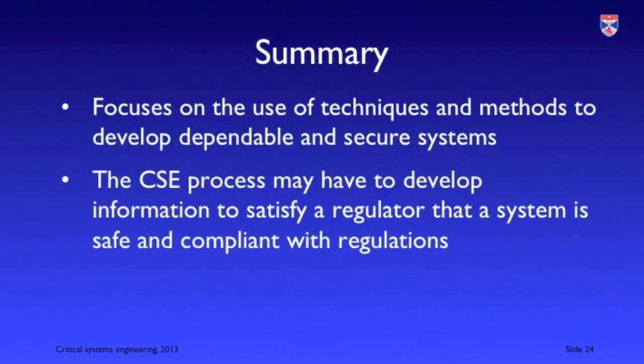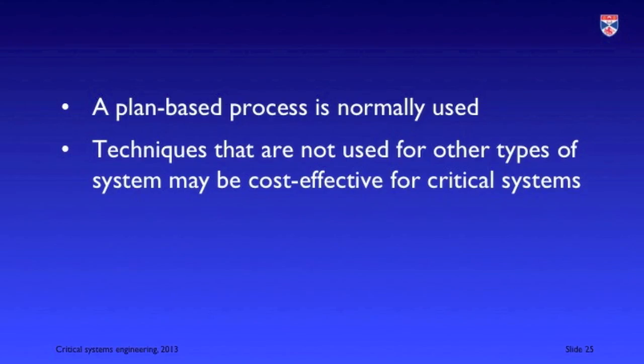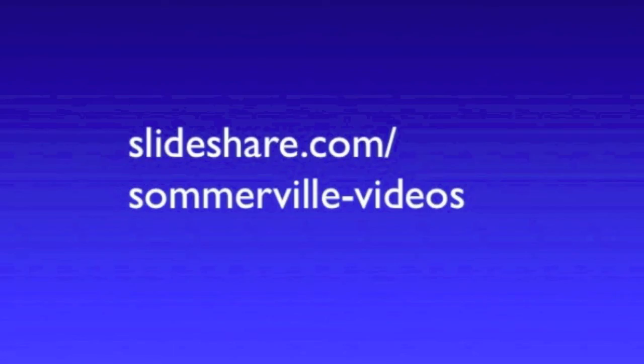Critical systems engineering focuses on the tools, techniques and technologies for developing reliable and secure systems. The critical systems engineering process may have to collect and collate information used by a regulator in the certification of the system. Normally a plan-based process is used for critical systems engineering rather than an agile process. Tools, techniques and technologies that are not cost effective for other types of software engineering may be used effectively for critical systems engineering. You can download the slides that accompany this video from my SlideShare account.